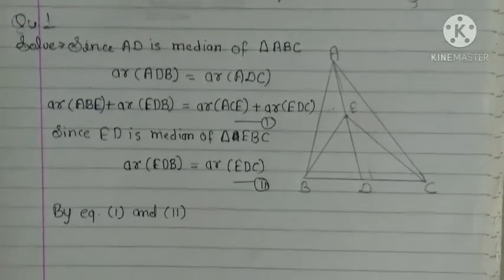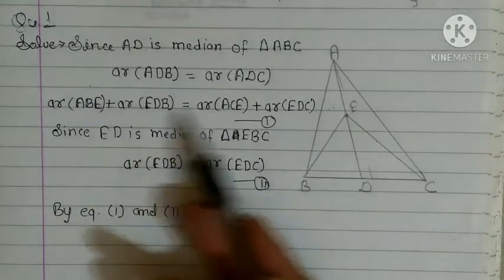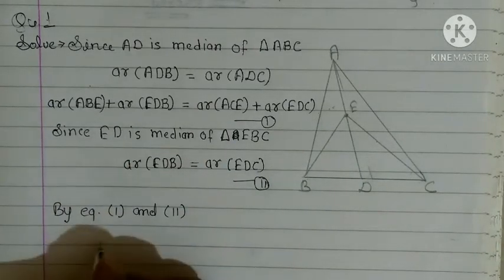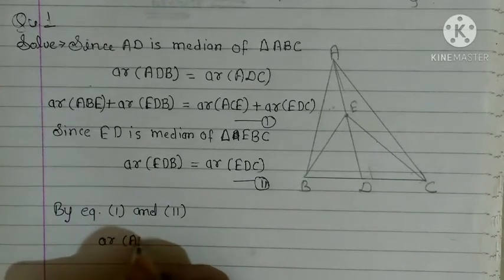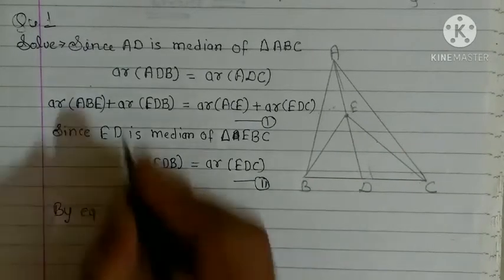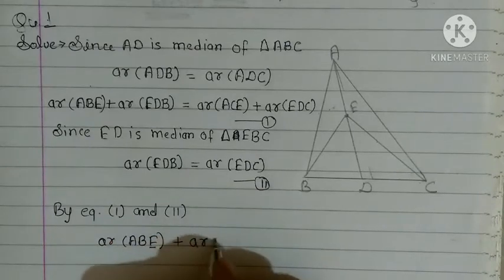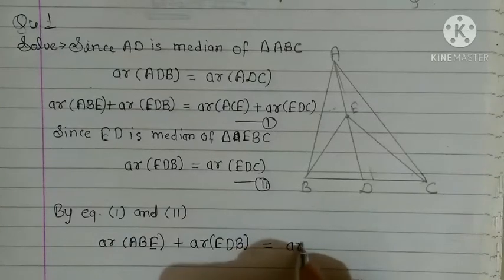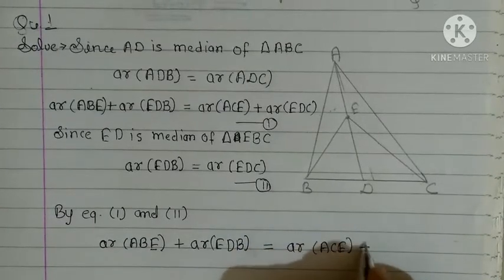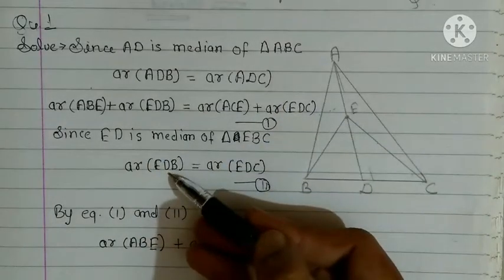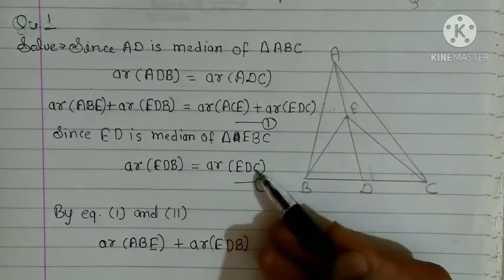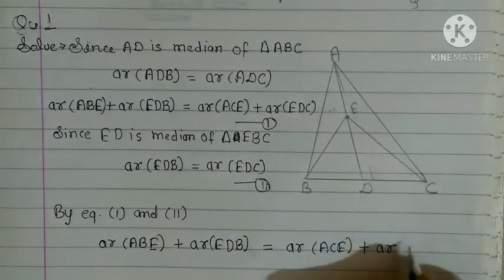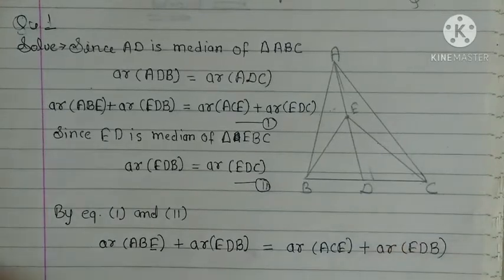By equation one and two, yeh joh wala, yeh joh line thi, wu equation one ki thi, aur yeh equation two. Ab kya gare hengi haan, area ABE plus area EDB equal area ACE plus, EDC ki jaghaan, EDB ligh saktay hai. EDC ke equal h EDB, तो हम EDC की जगह EDB अब transpose करें.